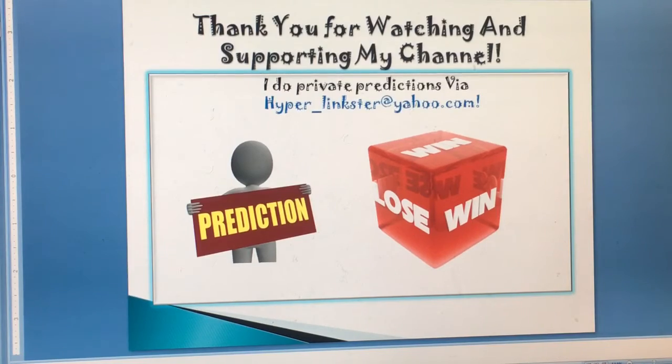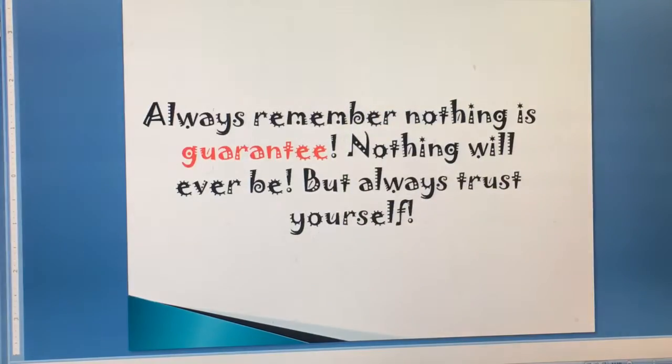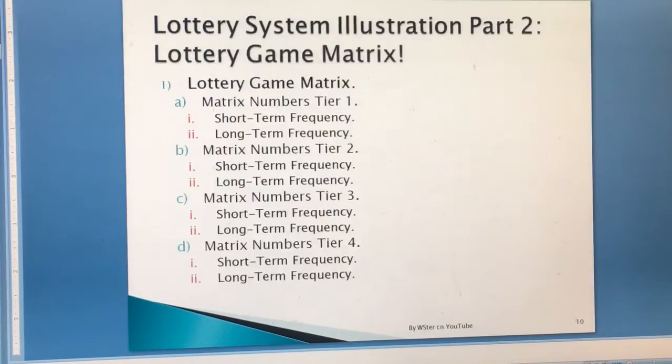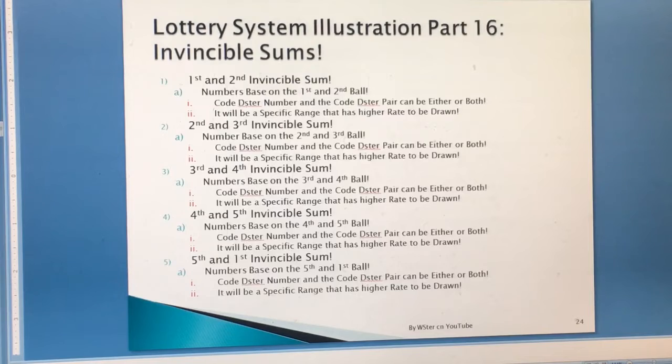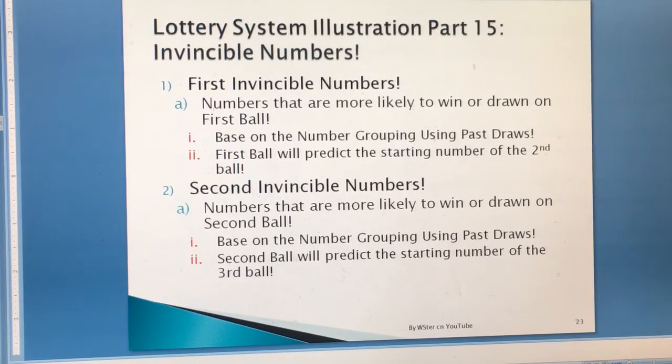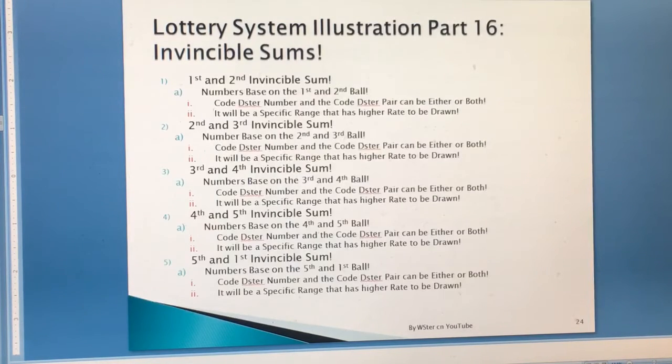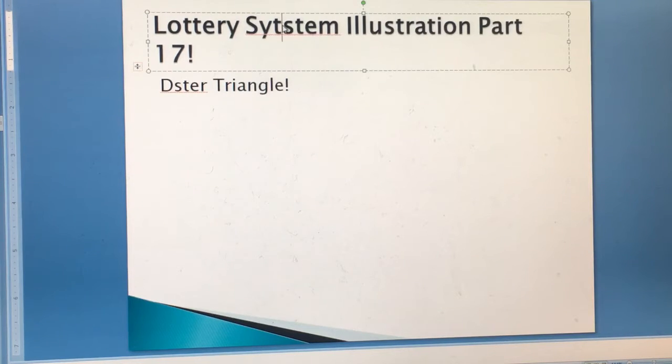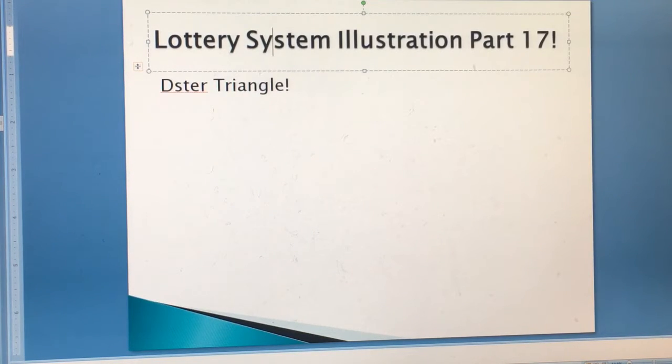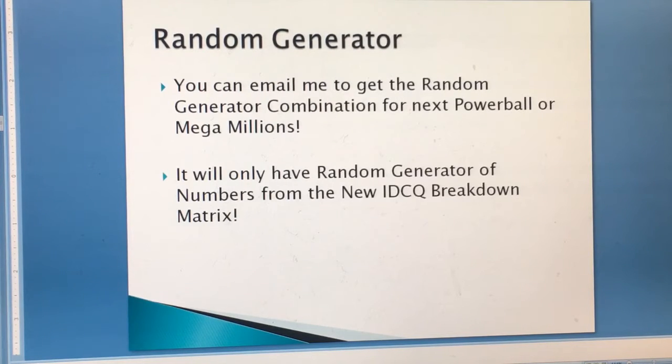Once again, hyper_linkster@yahoo.com. The lottery coaching system goes from part 1 to part 17. I'm going too fast - these illustrations will also be under my video. It dictates which illustration is what. So 15-16 is invisible numbers and 17 is the Dater Triangle, so Dater Triangle is the newest illustration.